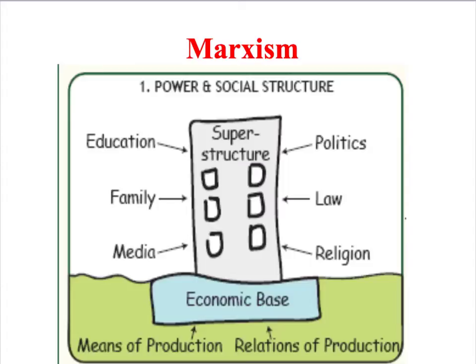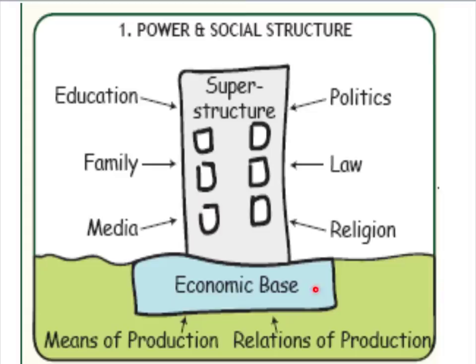Marxists argue that if you want to understand how any society works, you need to start by looking at how society produces the goods and services that people consume and need in order to survive. This economic base — the foundation of society — consists of means of production and relations of production. The means of production simply refers to all of the things that we use in order to make a living, such as land, factories, mines, shops, banks, and so on — all of the things needed to produce goods and services within our economy.